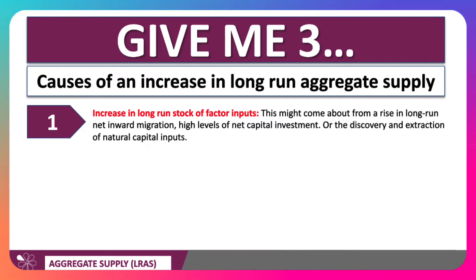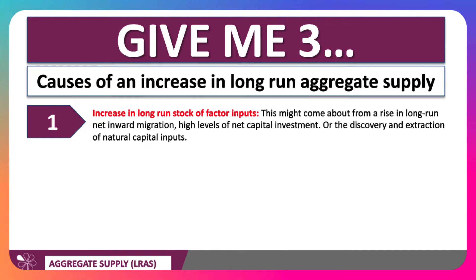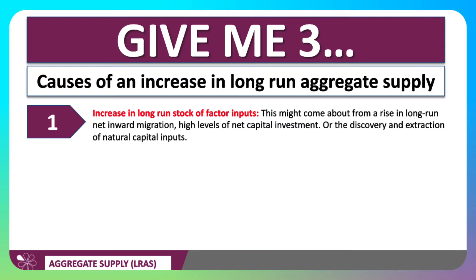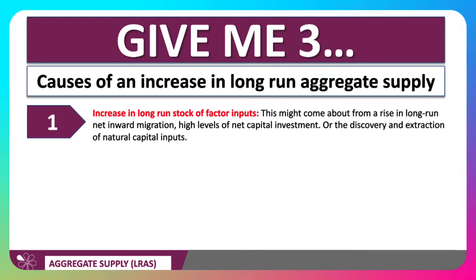For example, that might come about from a rise in long-run net inward migration. That's happened in the UK, for example. We've had many years now where the population has grown, and in particular, that's caused by a rise in net inward migration, adding to the labour supply. A country may also get more factor inputs from higher levels of investment, including capital investment in new tools, factories and essential infrastructure.